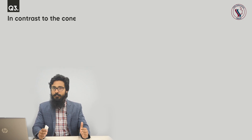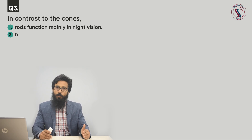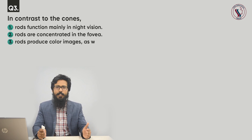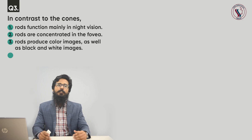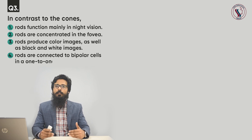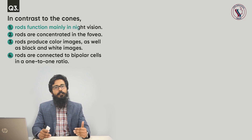Question number three. In contrast to the cones: option one, rods function mainly in night vision; option two, rods are concentrated in the fovea; option three, rods produce color images as well as black and white images; option four, rods are connected to bipolar cells in a one-to-one ratio. The correct answer is rods function mainly in night vision.